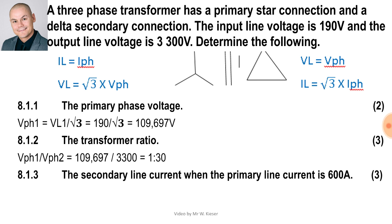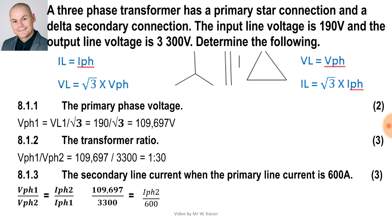To calculate the secondary line current when the primary line current is 600 amps: on the primary side it's star connected, so IL equals I phase. The line current of 600 amps is also our phase current. On the secondary side, to find the line current we first work out the phase current using the equation: V phase one over V phase two equals I phase two over I phase one. Substituting: primary phase voltage is 109.697, secondary phase voltage is 3300, secondary phase current is the unknown, and primary phase current is 600 amps.